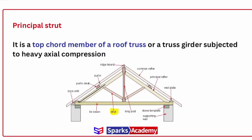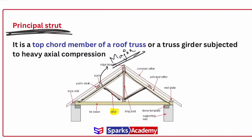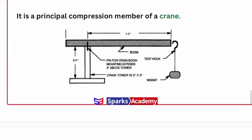The principal strut is nothing but the top chord member, where you have a major compression load. If you have a compression load on a member, it can act. You need the top chord members in the roof truss. So this is the principal strut we have said — it is nothing but the top chord member of the roof truss.